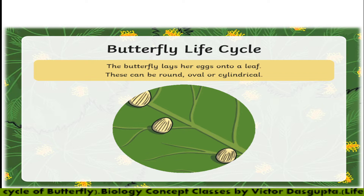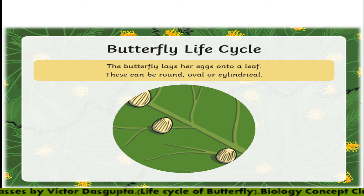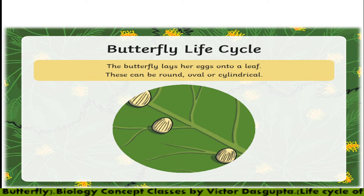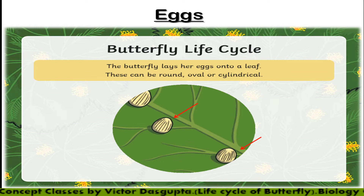The butterfly life cycle starts with small tiny eggs, which are laid in the leaves — basically under the leaves. These eggs can be of different shapes: they can be round, oval, or cylindrical in shape. It depends on the species; it is a species-specific characteristic.